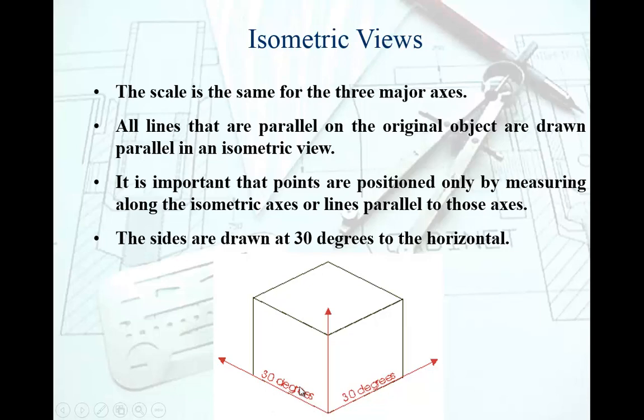Instead of drawing objects on a 90-90-90 coordinate system we go for these isometric axes. As you can see the scale remains the same. The edge here is exactly the same as the edge here.